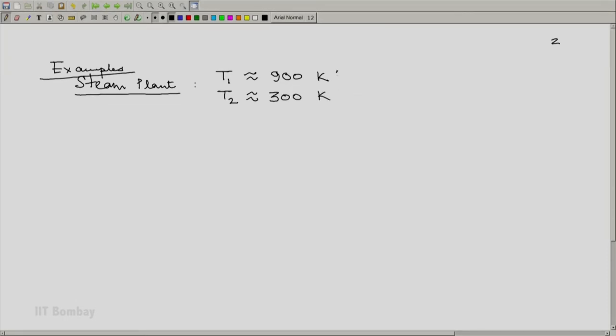This gives us a maximum efficiency of 1 minus 300 by 900, which is roughly 0.67 or 67 percent. Actual efficiency will be less than that, significantly less than that. The typical steam plant efficiency today is of the order of about 35, 40 percent.